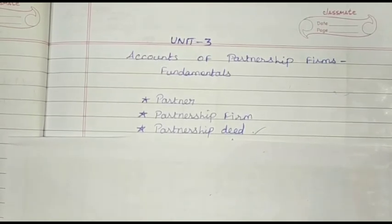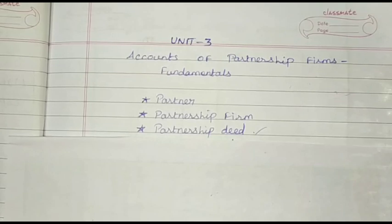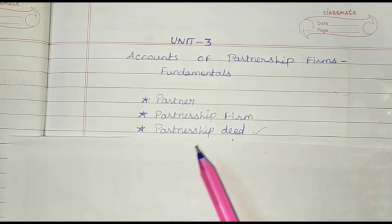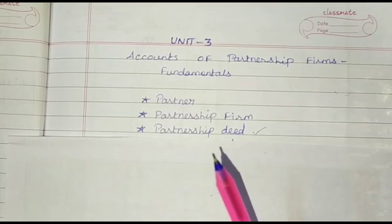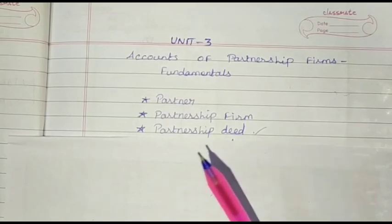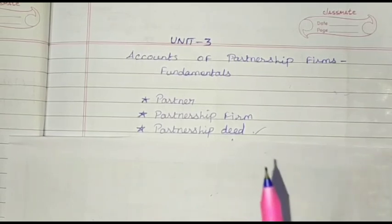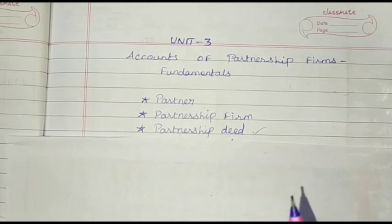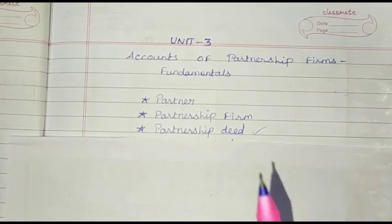Next one: Contents of Partnership Deed. The contents of a partnership deed include: name and place of business, nature and place of business, date of commencement and duration of business, name and address of all the partners, capital contributed by each partner, profit sharing ratio, amount of drawings allowed to each partner, rate of interest to be allowed on capital, rate of interest on drawings of partners, rate of interest on loans provided by partners, amount of salary to be allowed to any partner, maintenance of accounts and audit procedures, etc.